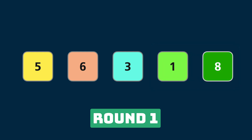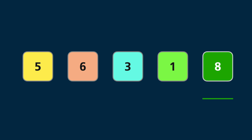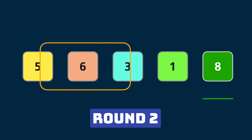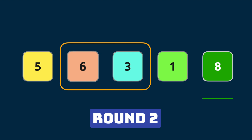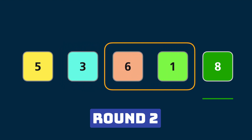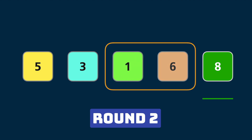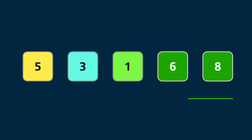First round is over and now one element out of five is in its correct position. Second round: we again start from the left, take the first pair — there is no need to swap. Second pair, we change six and three. The last pair on round two is six and one, and we move six after one. Now two elements, six and eight, are in their positions.